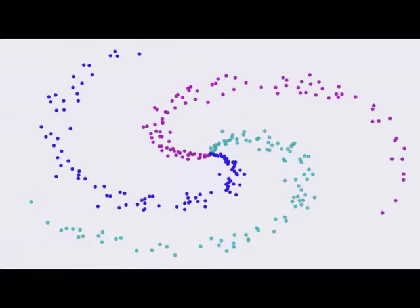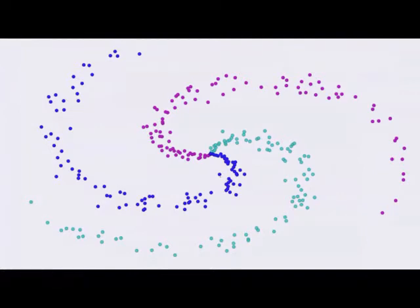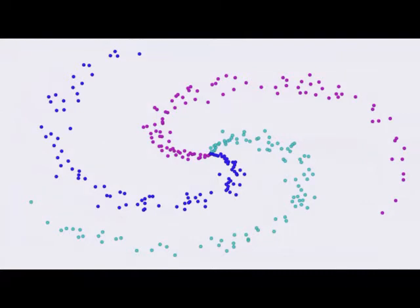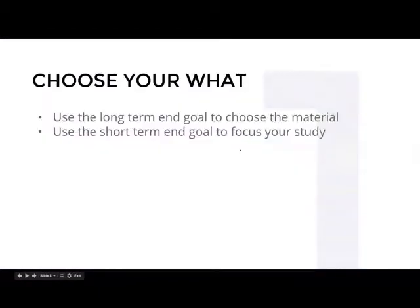For a smaller session goal, I'd pick something much simpler — just four points on the screen — and try to build a simple single-layer neural network that can distinguish those points. Then I'd get more complicated, either by adding more data or adding more complexity to the algorithm, like back-propagation or different types of activations. So: choose your what — have a long-term goal to choose the material, and a short-term goal to focus individual study sessions.